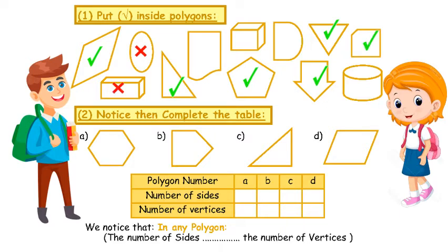This is not a polygon because it's a solid 3D shape. This is not a polygon because it has a curve. This is not a polygon because it's a 3D shape. This is not a polygon because it has a curve in it. And this is not a polygon because it's a solid 3D shape.